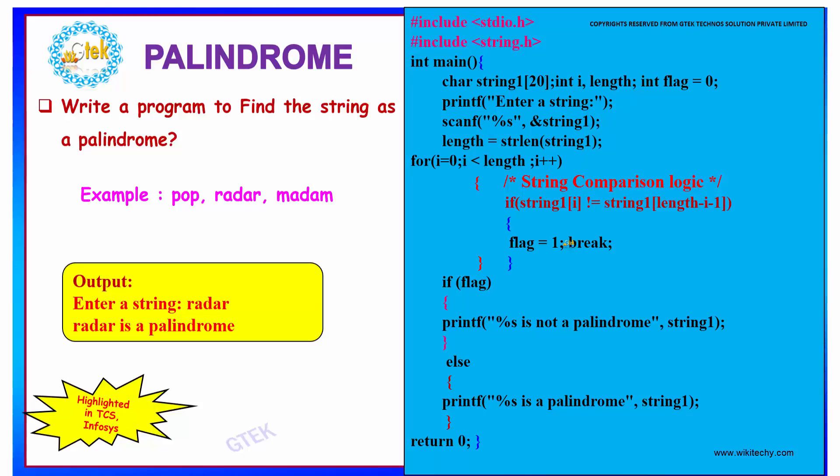So our for loop terminates and control comes to the else path. Hence we get the answer to be a palindrome.